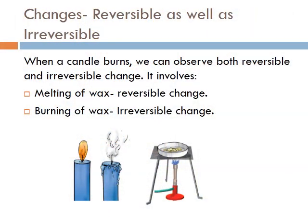There are some changes which are both reversible and irreversible. Like when a candle burns, we can observe both types. We observe a reversible change when wax melts, as the molten wax can be solidified again. And we observe an irreversible change when the burning of wax takes place — when the wax burns, we observe some fumes and gases coming out of it, which cannot be reversed.